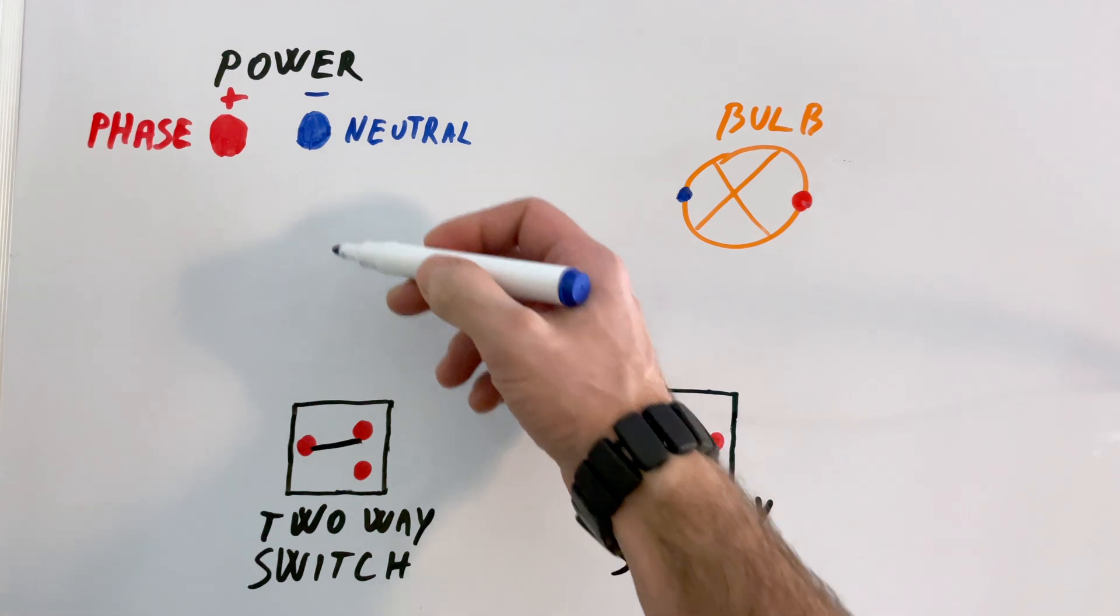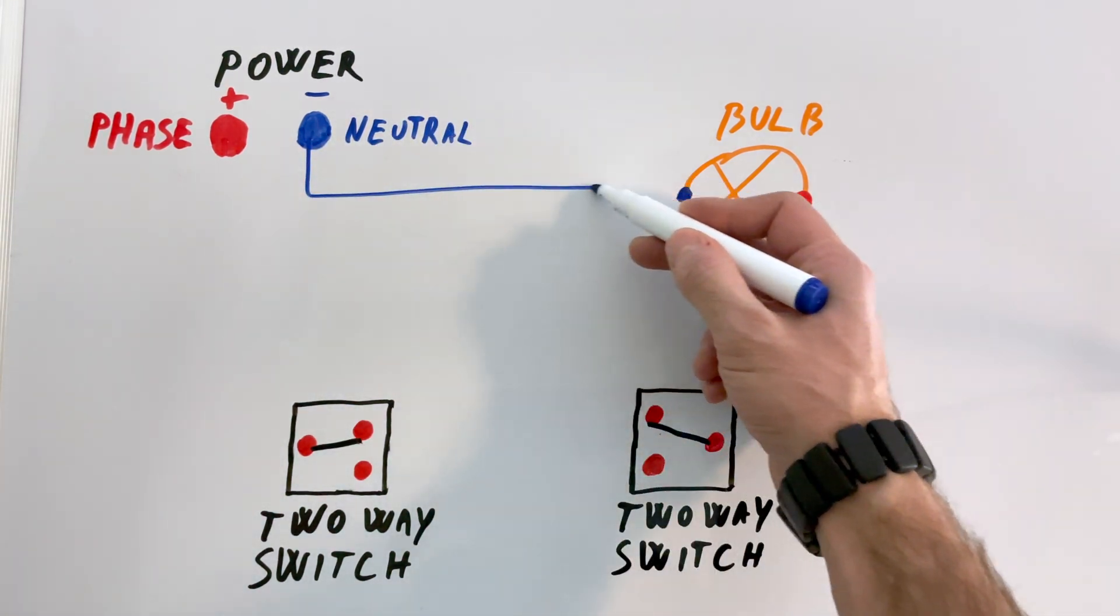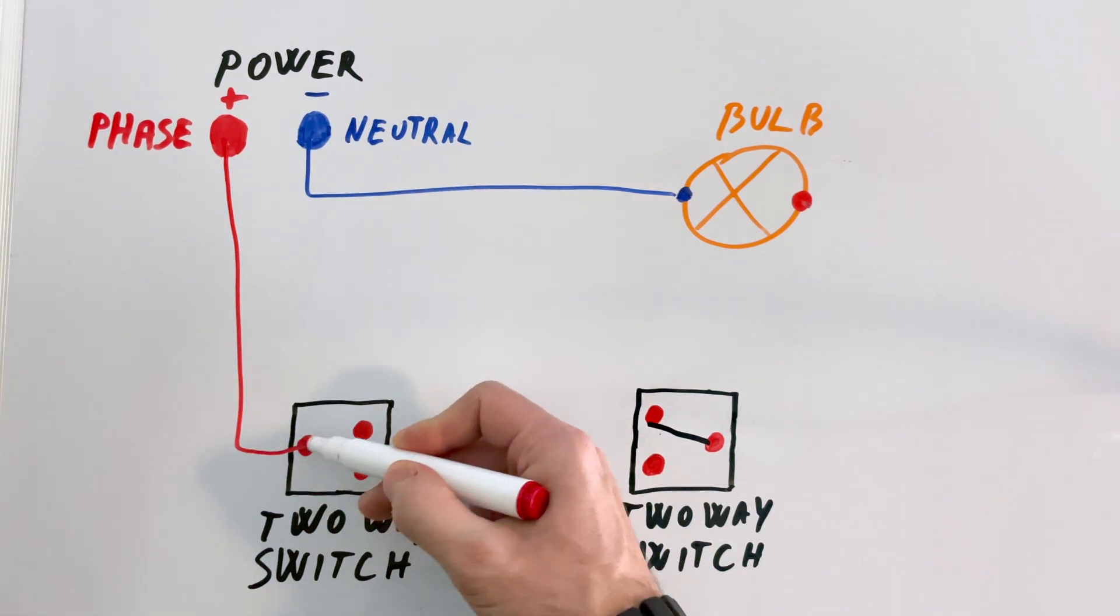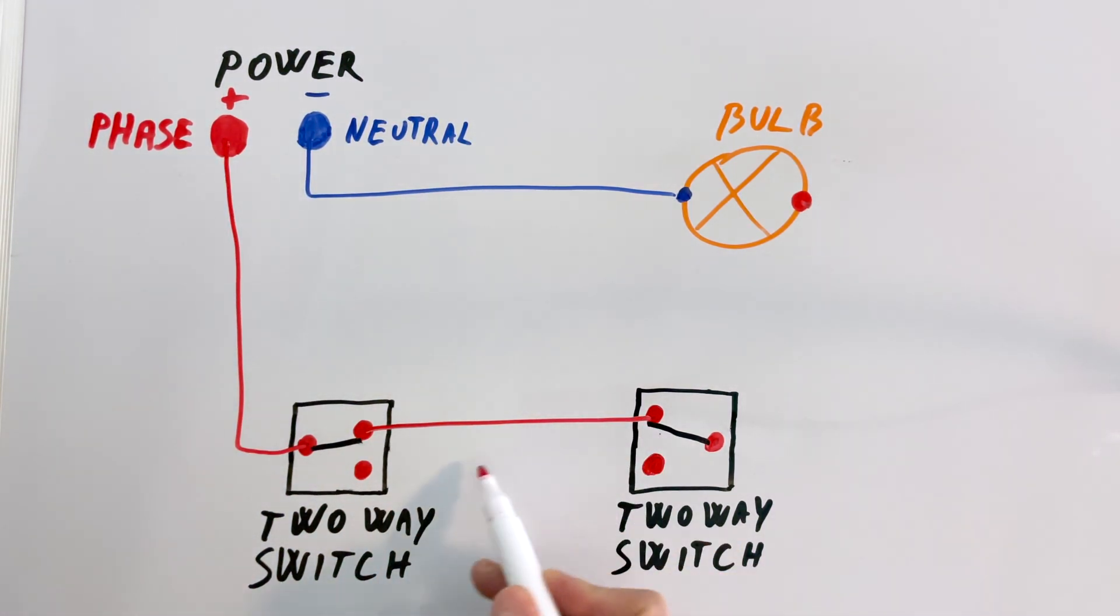First, the neutral wire goes directly to the bulb. The phase wire connects to the first switch. Then, we link the two switches together. Finally, we connect the common terminal of the second switch to the bulb.